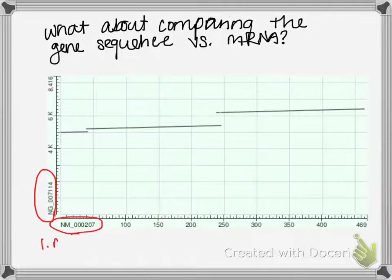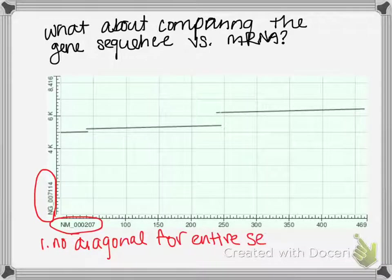One is that no diagonal, no straight diagonal line across the whole thing, no diagonal for the entire sequence. So they don't match completely.